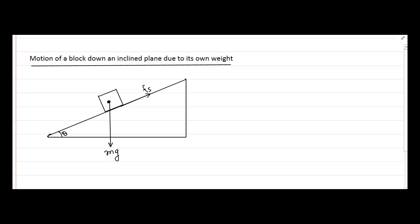The second force is the weight of this block acting in the downward direction, and this force can be broken up into its two components. One is the component perpendicular to the inclined plane, and the other component is parallel to the inclined plane. With the help of laws of geometry, if this angle is theta then this angle will also be equal to theta. Therefore this vertical component will be Mg cos theta and the component along the inclined plane will be Mg sin theta.